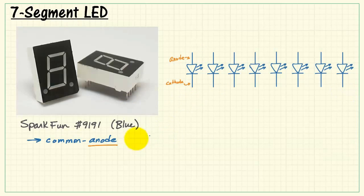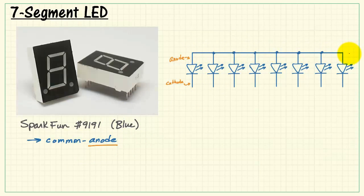We have a total of 8 LEDs in this device. All of the anodes are wired together and brought out as an individual pin, called CA for common anode.